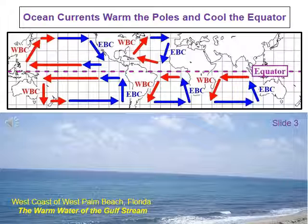Eventually the water turns east and goes back across the ocean. The warm water loses more and more heat as it travels towards the poles and back east. By the time the water reaches the west coast of a continent, it is quite cold. The water is taken towards the equator by an eastern boundary current, and the cycle repeats.